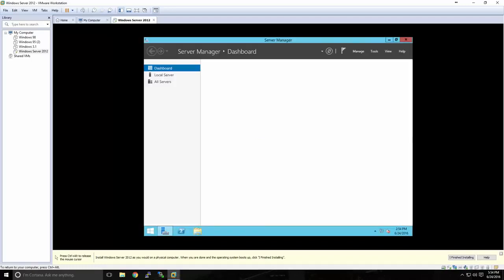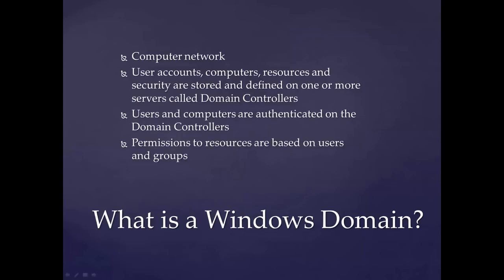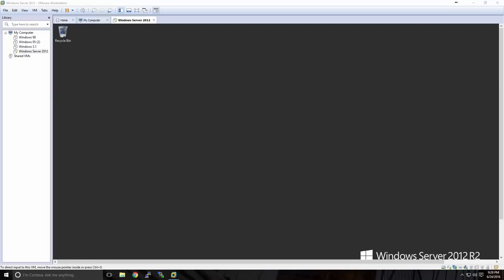The Server Manager window will open, giving me an overview of my server. We've successfully installed Windows Server onto a virtual machine, and from here we can begin to set up our environment. Now that we have a working Windows Server 2012 installation, our next step is to create a Windows domain. A Windows domain is a computer network where user accounts, computers, and resources, and the security for all those things, are stored and defined on one or more servers called domain controllers. It's time to set up our Windows Server as a domain controller and create our first domain.